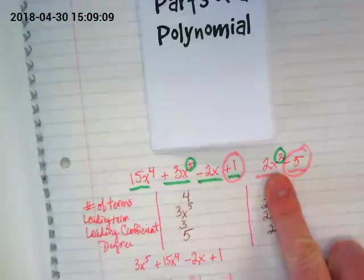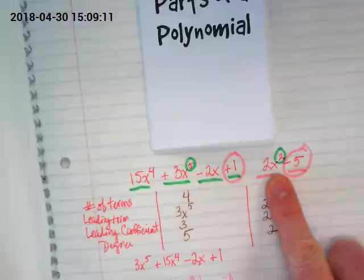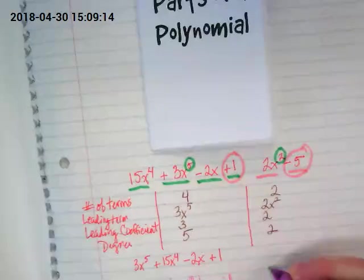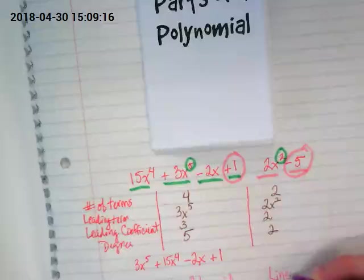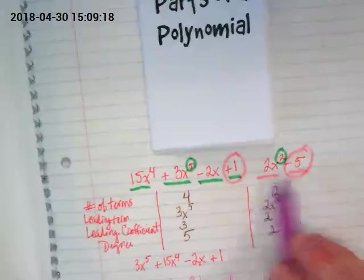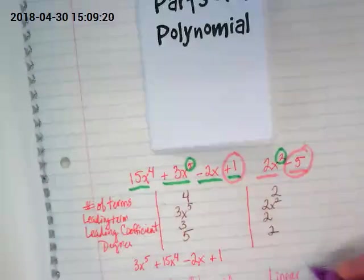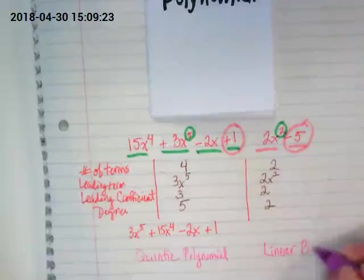This one, its highest exponent is a two. And what's the first name for an exponent of two? It's linear. And how many terms does it have? Also two. So its last name is binomial.